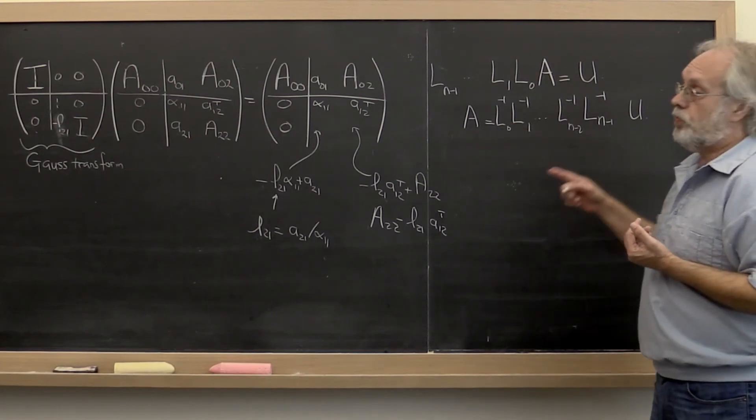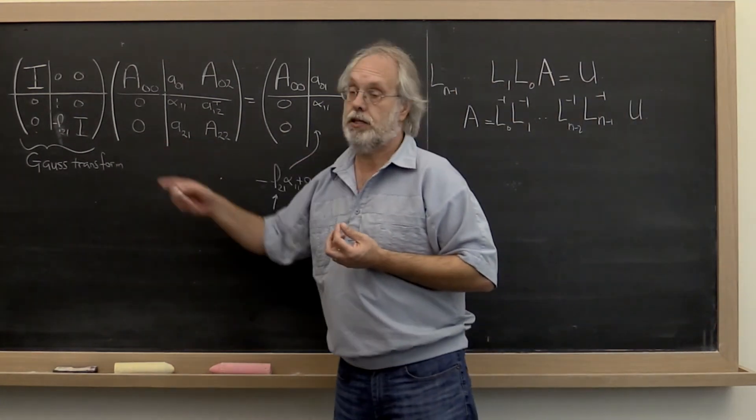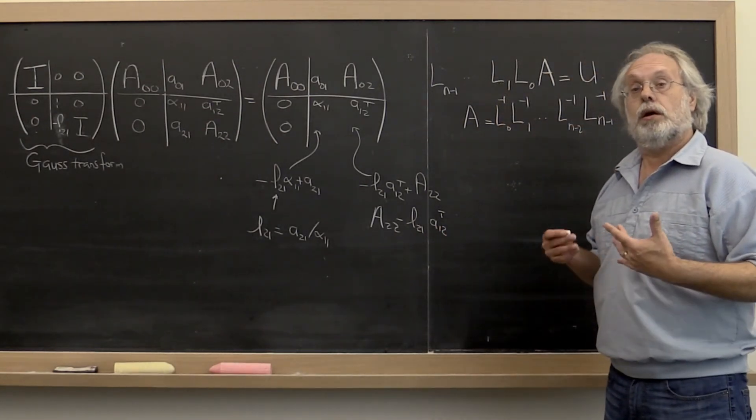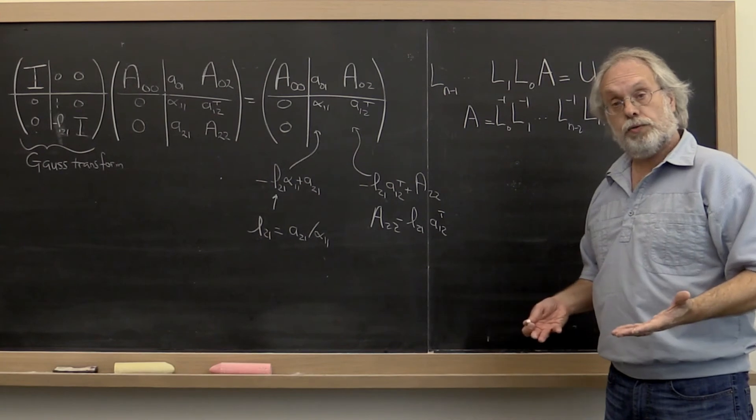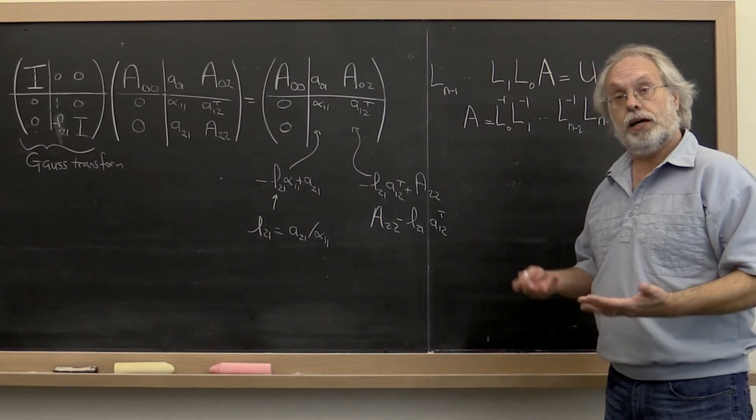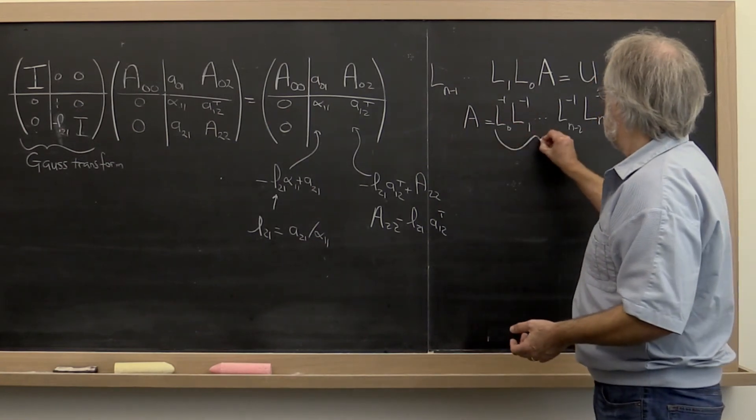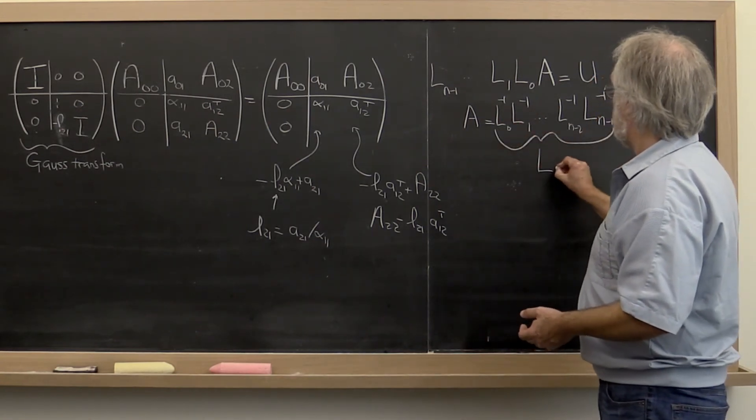Each of the Gauss transforms is a lower triangular matrix. You may remember that if you multiply lower triangular matrices together, you get a lower triangular matrix. So all of this is actually a lower triangular matrix.